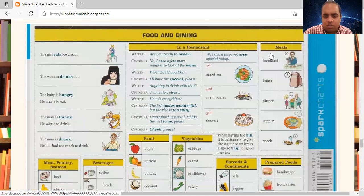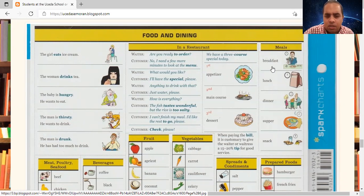Meals. Breakfast. Lunch. Dinner. Supper. Snack. In a restaurant, the first meal you get is the appetizer. The second meal is the main meal. It's called the main course. And lastly, dessert.